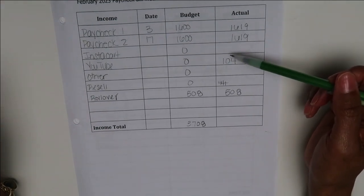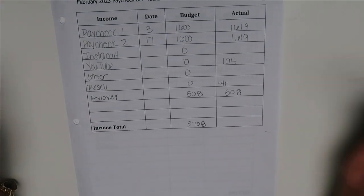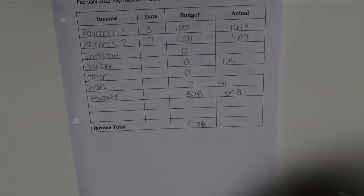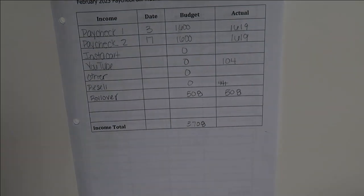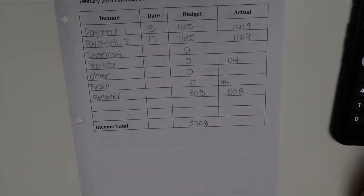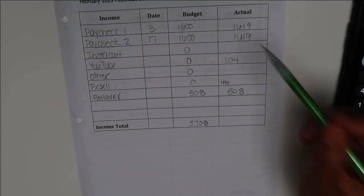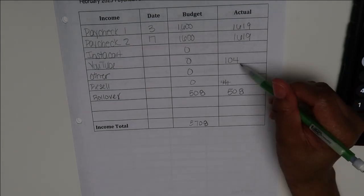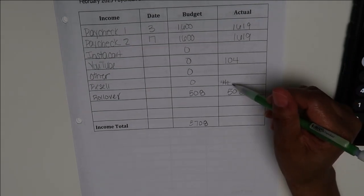Both of my paychecks for this month are $1,619. I may do Instacart tomorrow. Other than that, I have not done it this month. I thought I did, but let me check real quick. Well, I guess I didn't do any Instacart so far this month. I may go tomorrow, we'll see. YouTube I made $104, and I resold some stuff for $44.